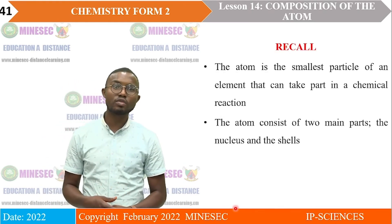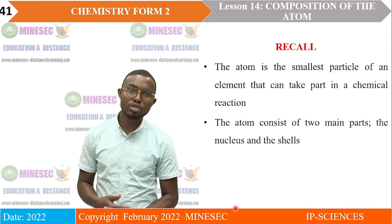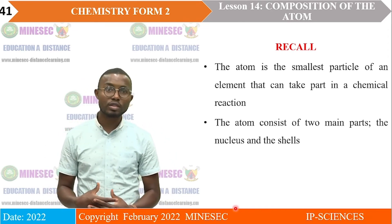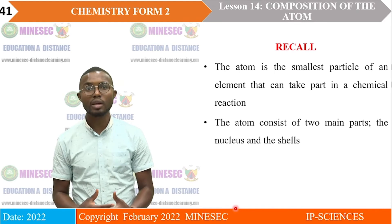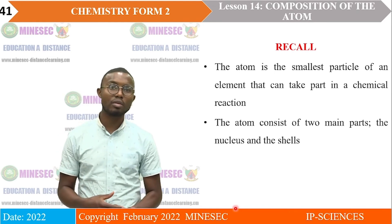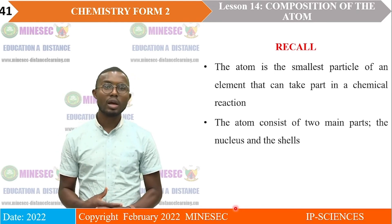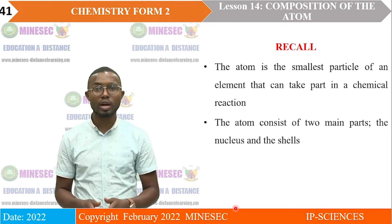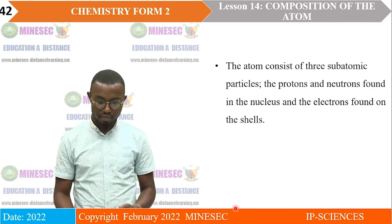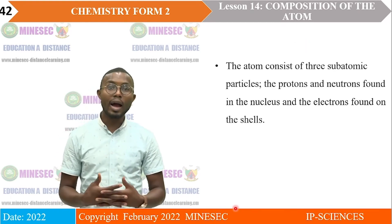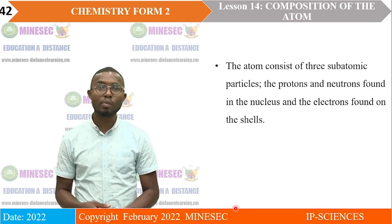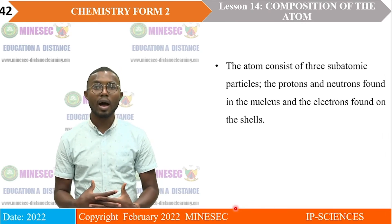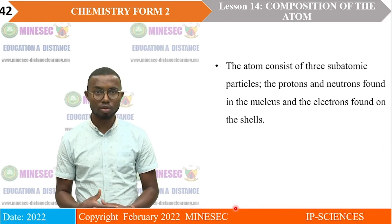In today's lesson, we saw that an atom is the smallest particle of an element which can take part in a chemical reaction. An atom consists of two main parts — the nucleus and the shells or orbit. An atom consists of three subatomic particles: the protons, the electrons, and the neutrons.